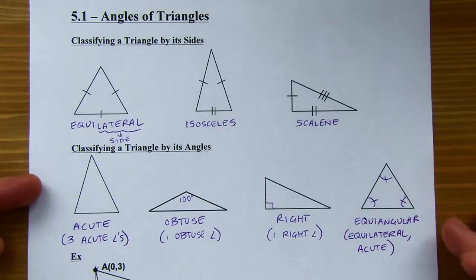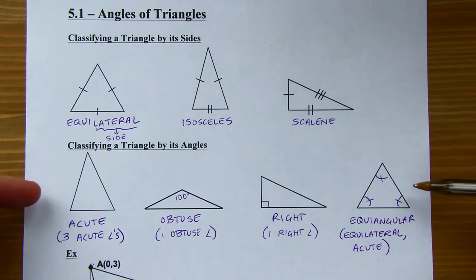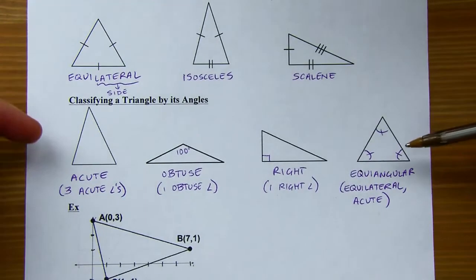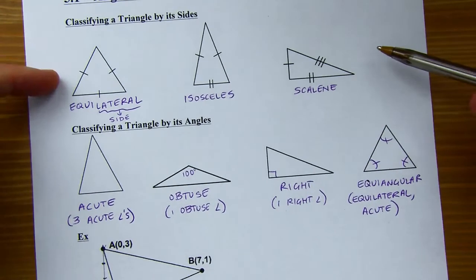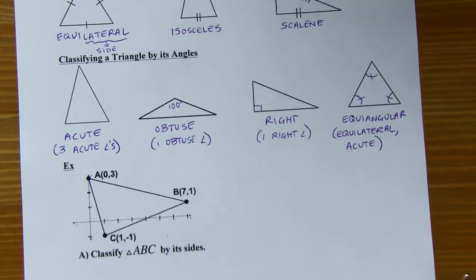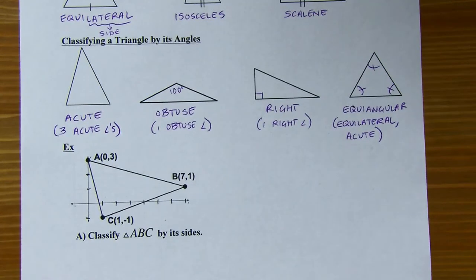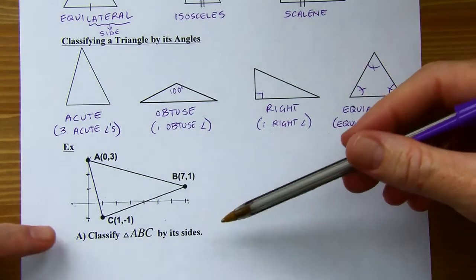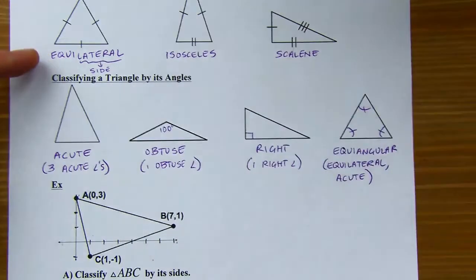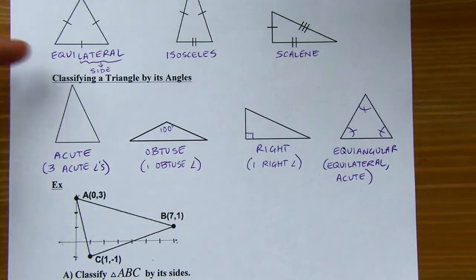So there are our different ways to classify by angles. Be really careful on questions when asked to classify — is it asking for a side classification or an angle classification? So let's look at this example: we've got a triangle on the coordinate plane and we're going to decide what type of triangle it is based on its sides. Our three options are equilateral, isosceles, or scalene. I need to check the lengths of the three sides.